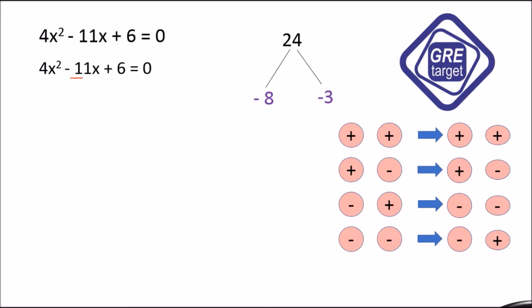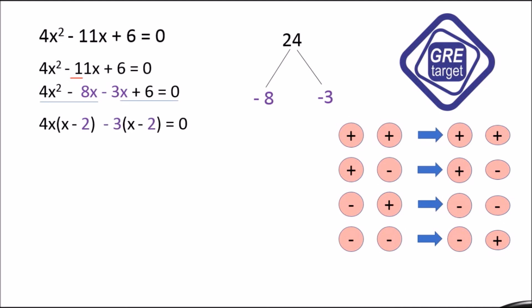In place of -11x, we replace with -8x and -3x: 4x² - 8x - 3x + 6 = 0. Take the common from the first two terms — common is 4x — giving 4x(x - 2). From the last two terms, take common -3, giving -3(x - 2) = 0. So x - 2 is common, giving (x - 2)(4x - 3) = 0.